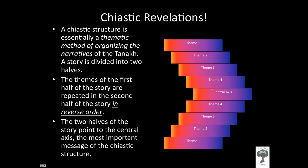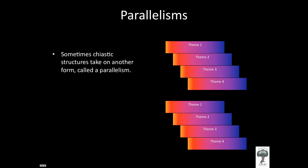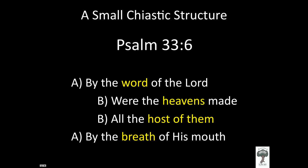All of the themes in the first half will be repeated in the second half of the chiastic structure, and both of them point to what is called the central axis. Sometimes the central axis does not exist. There's also another thematic pattern called a parallelism, where the themes in the first half — theme one, two, three, and four — repeat themselves in the second half in the same order.